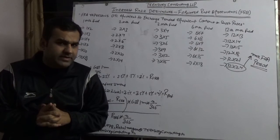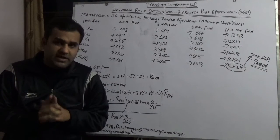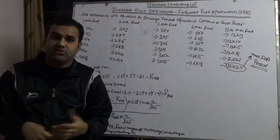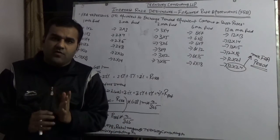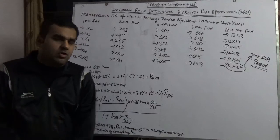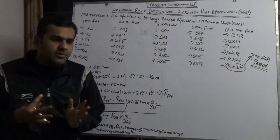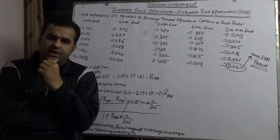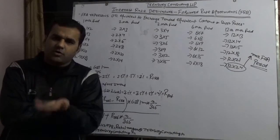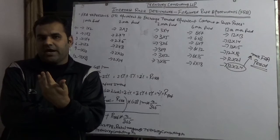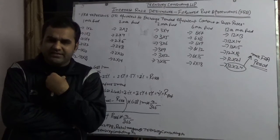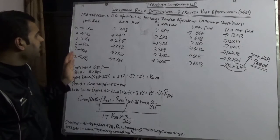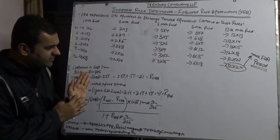I already told you in the first video that a forward rate agreement has nothing to do with the forward contract. Unfortunately there is a perception in the market that it has everything to do with forward contracts. Forward contracts are all about currencies; on the other hand, forward rate agreements are all about interest rates. The terminology we use in FRA is borrowed from forward contracts, but that doesn't mean they are the same.